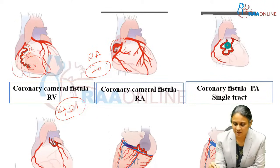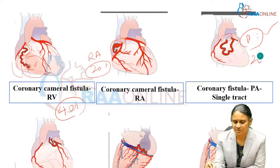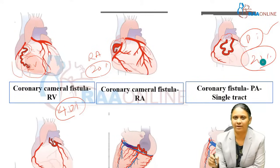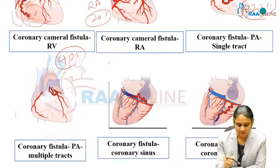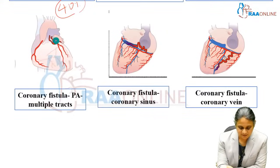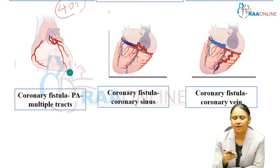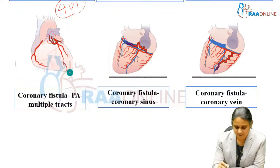Here there is a single tract fistula from the left coronary artery going to the pulmonary trunk, constituting about 20 percent of cases. There can also be multiple tracts from the left coronary artery to the pulmonary trunk — it can be single or multiple direct vascular or sinusoidal tracts.